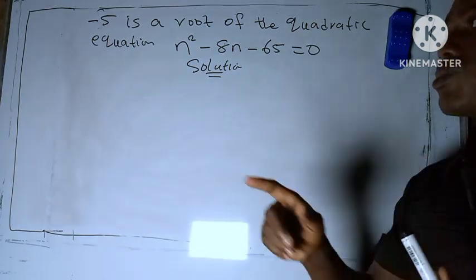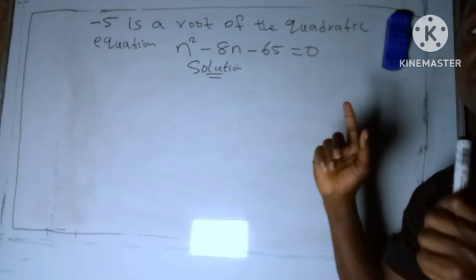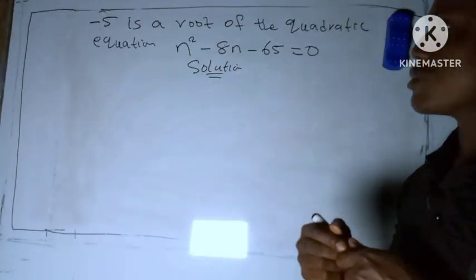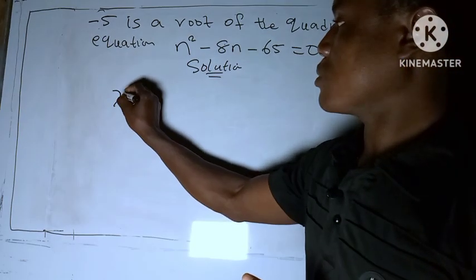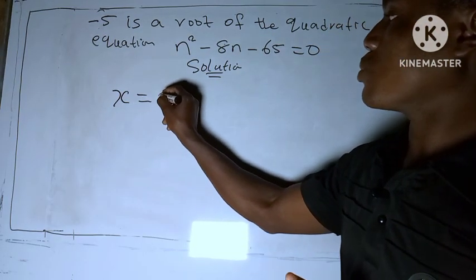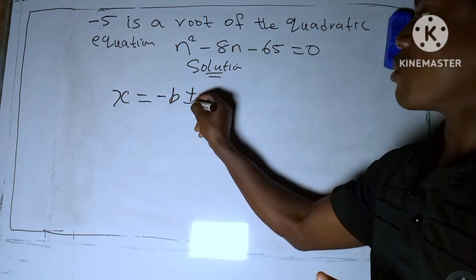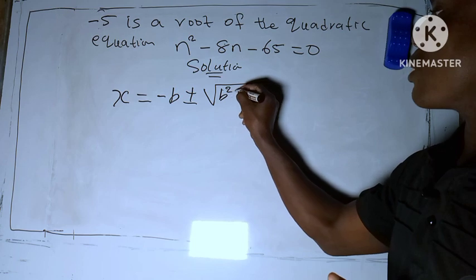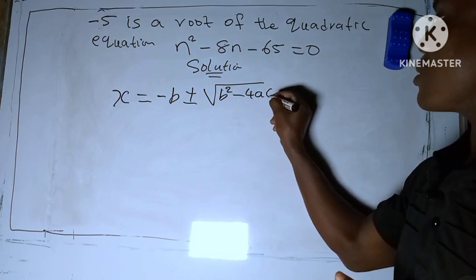Let's use the formula method to solve or to find the second root. You know, in a quadratic equation, we have the formula: x = (-b ± √(b² - 4ac)) / 2a.